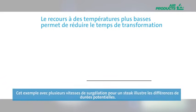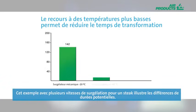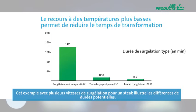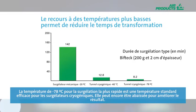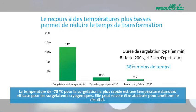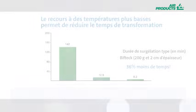This example of freezing speeds for steak demonstrates the time differences that can be achieved. The minus 78 degrees setpoint of the quickest freeze is a typical and efficient temperature for cryogenic freezers, but it can be pushed to lower temperatures to maximize output.